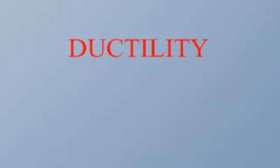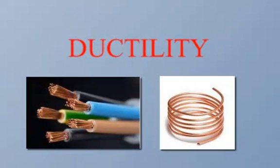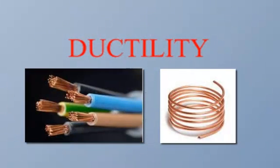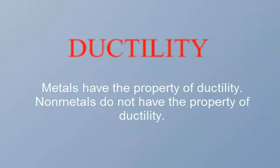Ductility is a new word — it's the ability to draw into wires. Things that are ductile include metals like copper, which you can draw into very thin wires. That's why we use it for electrical appliances. If you look at your computer cord, it has a rubber coating as an insulator, and underneath you'd see copper wires — copper conducts electricity and can be drawn into wires, so it's very ductile. Non-metals are not ductile, because most non-metals are gases at room temperature.